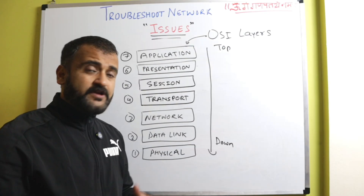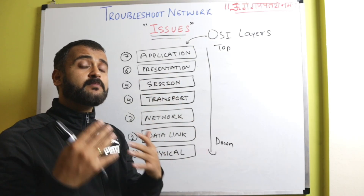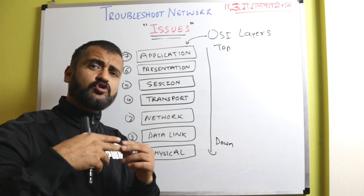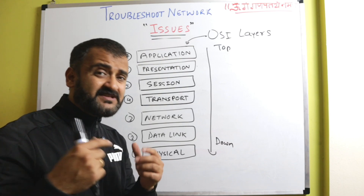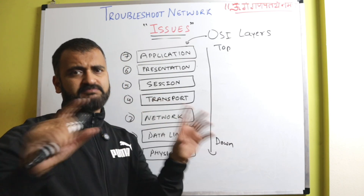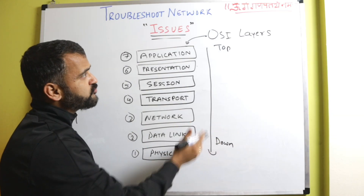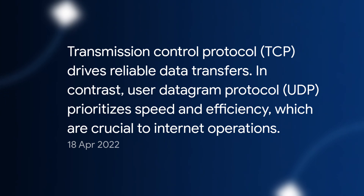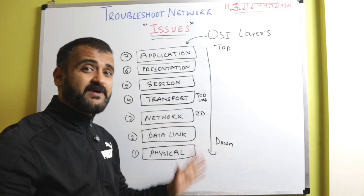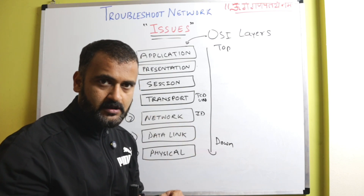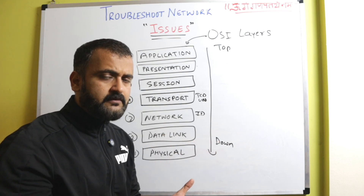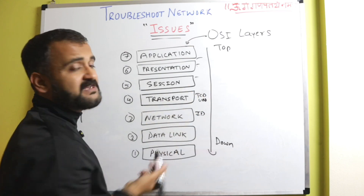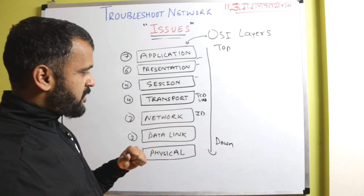The first approach is the top-down approach. In the top-down approach, you first see if your application itself is misconfigured or not working correctly — it could be due to a bug, an issue with HTTP or HTTPS protocols, or a certificate issue. The top-down approach starts from the application layer, presentation layer, session layer, transport layer — where TCP or UDP protocols come in — and then the network layer. This approach is very good when the issue is persistent with a particular application, or when a specific user or set of users are facing it.